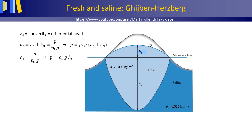Freshwater from rain that falls on a dune on an island in the sea causes the development of a freshwater hydraulic head relative to mean sea level. As the infiltrating and percolating freshwater replaces the saline water originally present below the surface, and as freshwater has a slightly lower density than saline water, a freshwater lens will develop that floats on the denser saline water.